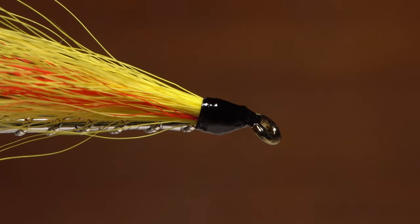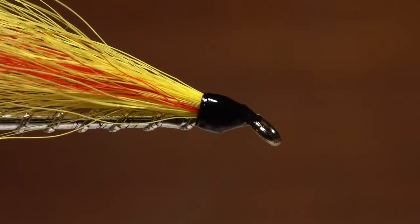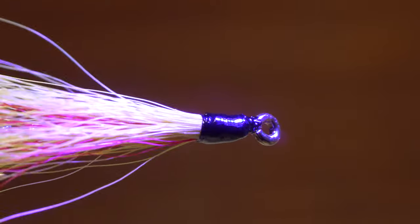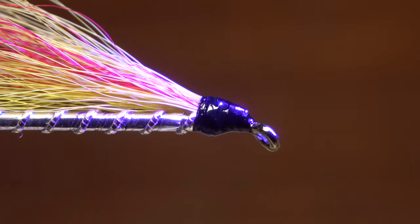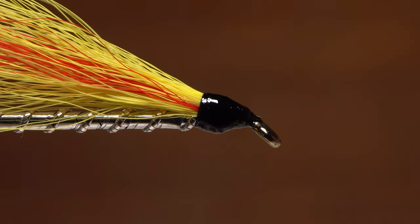With all the texture of the thread filled in and smooth, use your bodkin to make sure the eye is clear, then give the entire head an ample bath of UV light. In just a matter of seconds, the resin will cure to a tack free finish and your Mickey Finn is ready to fish.